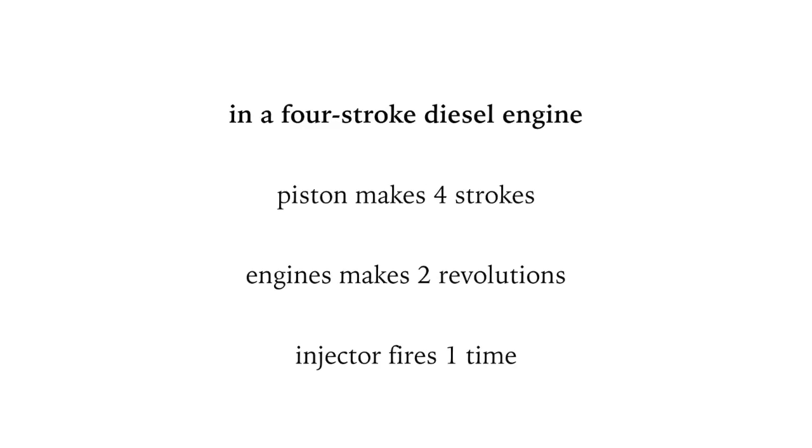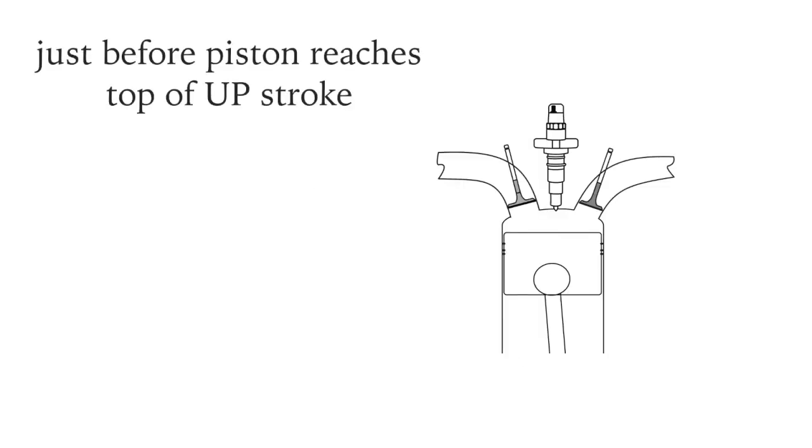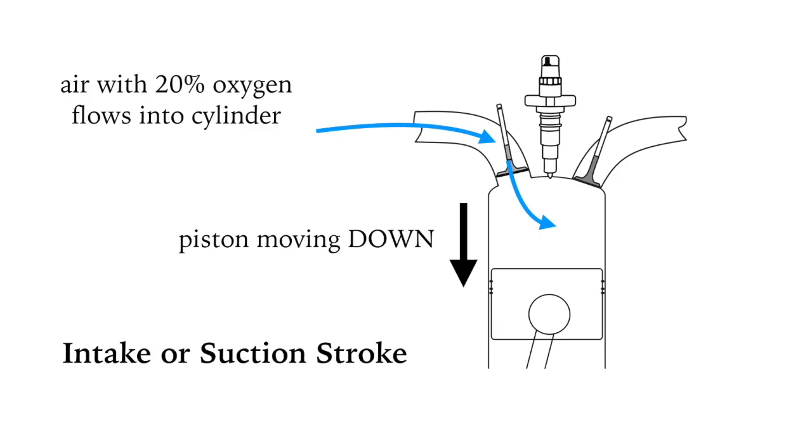In a four-stroke diesel engine, the piston makes four strokes while the engine makes two revolutions and the injector fires once. Let's take a closer look. Just before the piston reaches the top of the upstroke, the intake valve opens. 20% oxygen in the air flows into the cylinder as the piston moves down. This is called the intake or suction stroke, though actually the air is being pushed inside by the atmospheric air pressure outside.